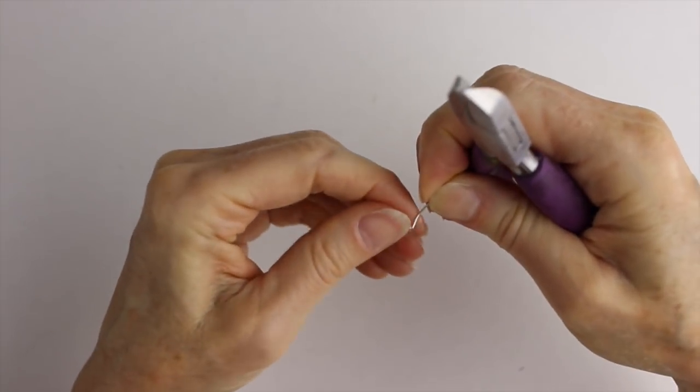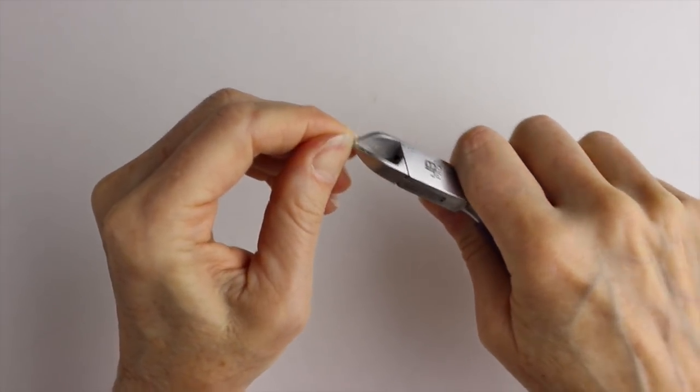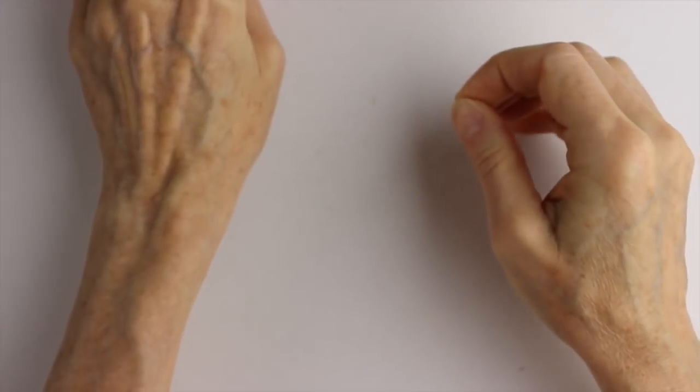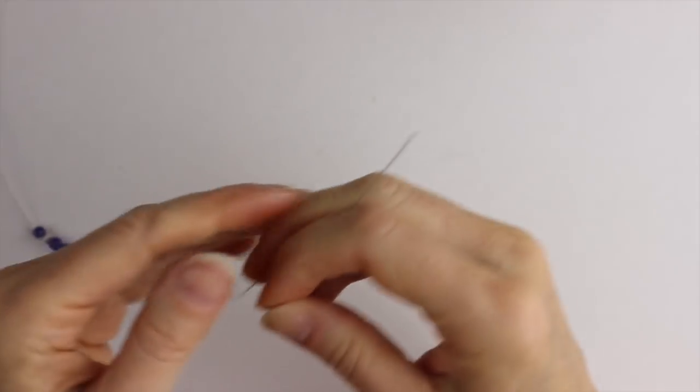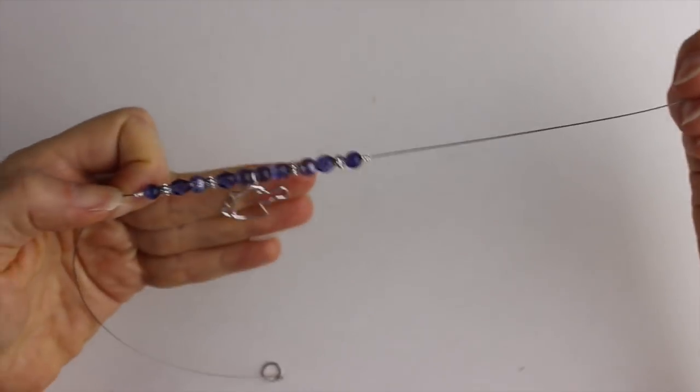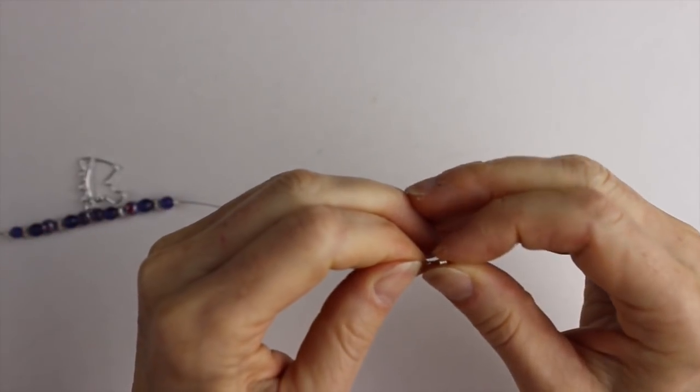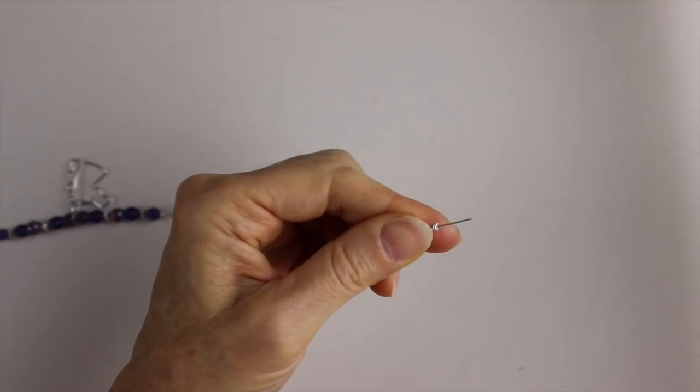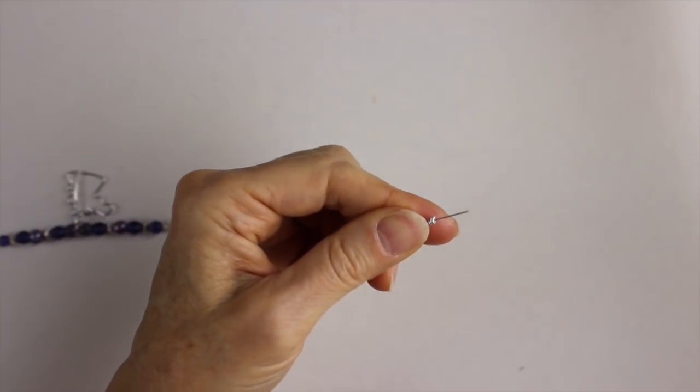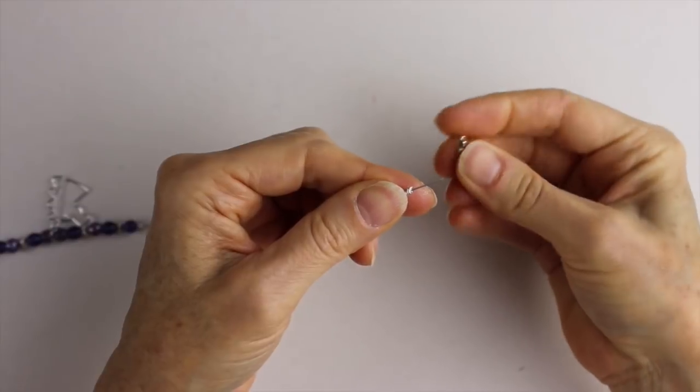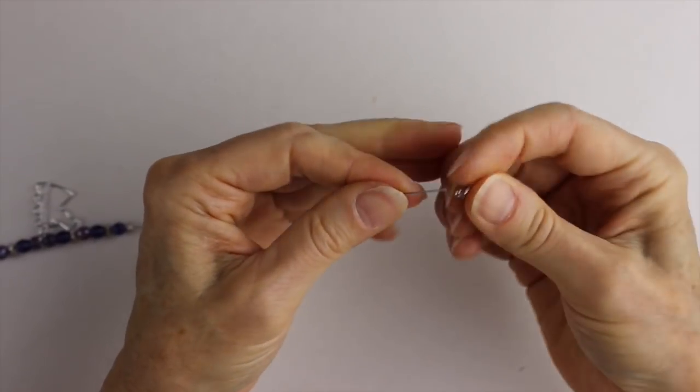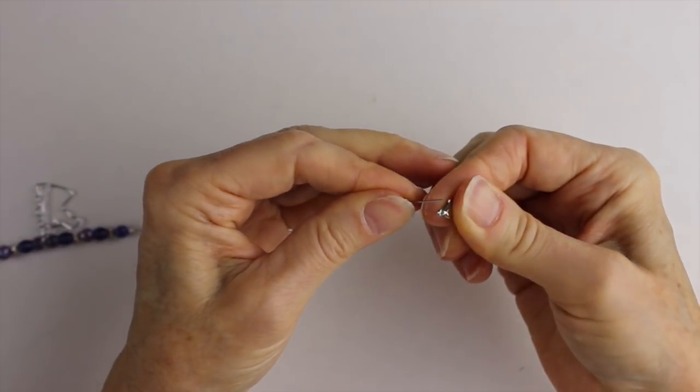We're going to put it to hold our clasp on the necklace. We cut the ends, and then we take our necklace here and we're going to put the crimp on the end of the necklace. Then we're going to get our little hook for the necklace and put it on there - you can use any kind of clasp that you want.